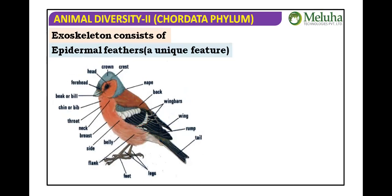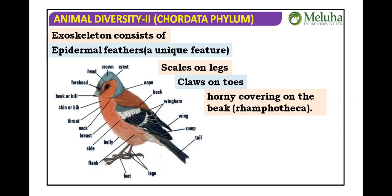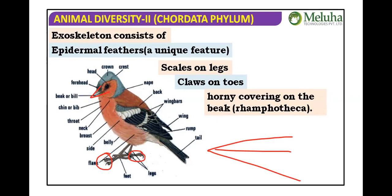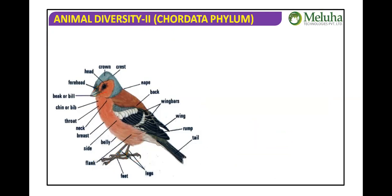The exoskeleton consists of epidermal feathers — a unique feature of birds. Other exoskeletal structures include scales on the legs, claws and toes, the horny covering called rhamphotheca, and the beak. Feathers are one of the major flight adaptations.